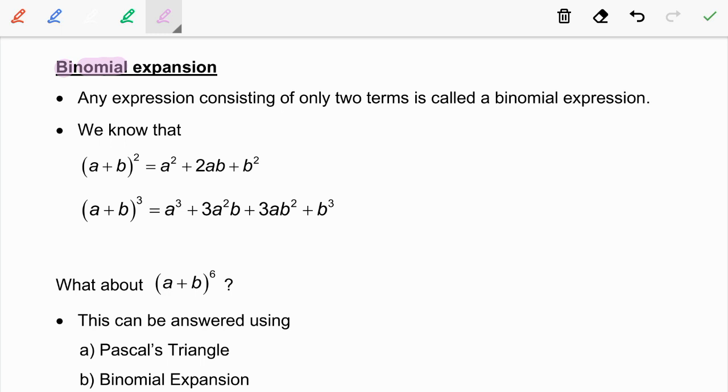Any expression consisting of only 2 terms is called a binomial expression. For example, a plus b is a binomial expression with 2 terms.